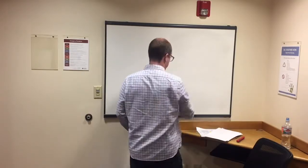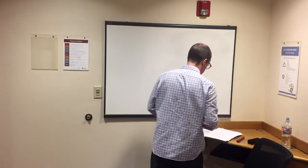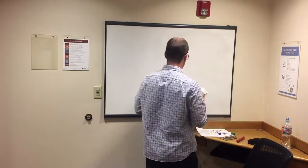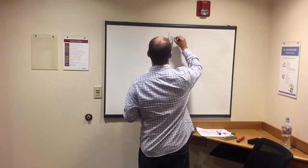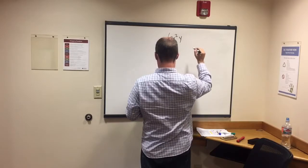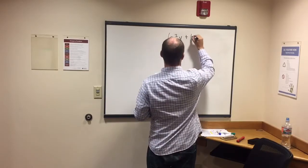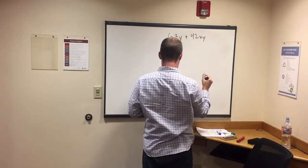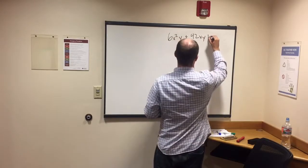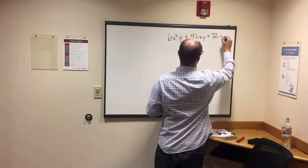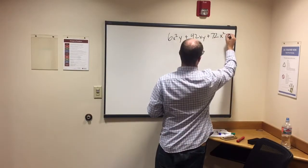some simpler questions like that, but you also might get something - this is going to take me a second to write out here - 6x squared y plus 42xy plus 72x squared z. That one, especially if you're not comfortable with factoring, probably just looks like a big